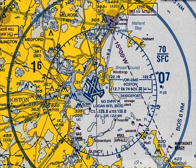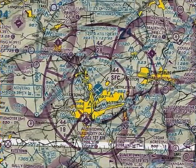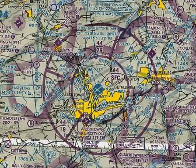In this chapter, we will fly a multi-leg westbound flight from Boston, Massachusetts, KBOS, to Allentown, Pennsylvania, KABE.